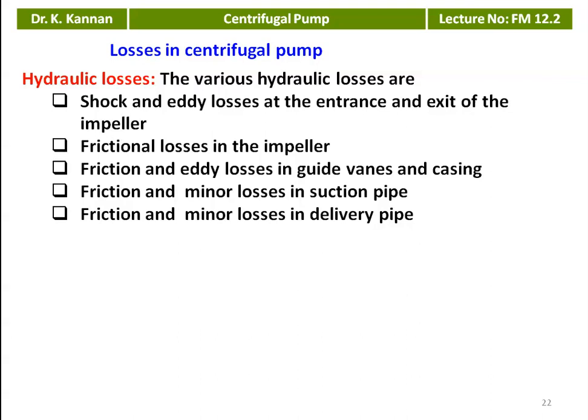There are friction and minor losses in the suction pipe, including losses when water enters suddenly or passes through a suddenly enlarging portion of the flow passage. In the suction pipe, we have a valve, pipe fittings, and a lengthy pipe, so both minor and major losses must be calculated. Similarly, friction and minor losses occur in the delivery pipe due to pipe fittings, sudden enlargement, or contraction. All these are called hydraulic losses.